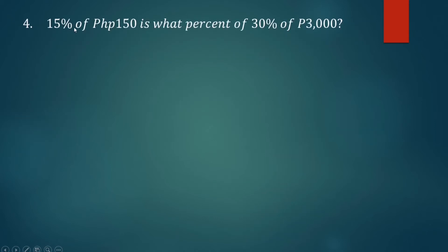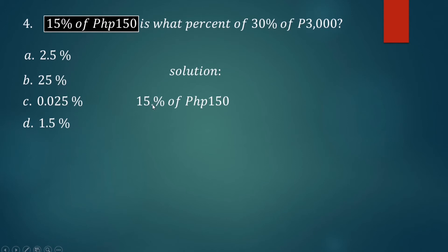Number four: 15% of 150 is what percent of 30% of 3,000 pesos? A) 2.5%, B) 25%, C) 0.025%, D) 1.5%. Here's the solution: first get 15% of 150. Change this percent to decimal, so the rule is move two places to the left. This is equivalent to 0.15, then multiply by 150, and we get 22 pesos and 50 cents.